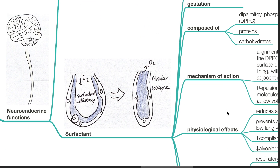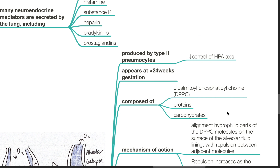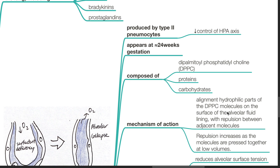Surfactant production. Surfactant is produced by type 2 pneumocytes and it is under the control of the HPA axis. It appears at 24 weeks gestation. Surfactant is composed of dipalmitoyl-phosphatidylcholine, DPPC, proteins and carbohydrates.